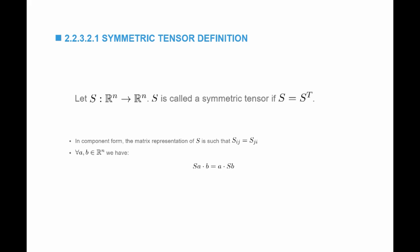From the abstract definition of the transpose, we know SA·B is equal to A·S^T B. But since S is equal to S transpose, it follows that SA·B is equal to A·SB. This is another important fact.